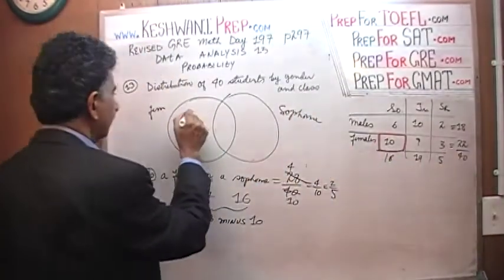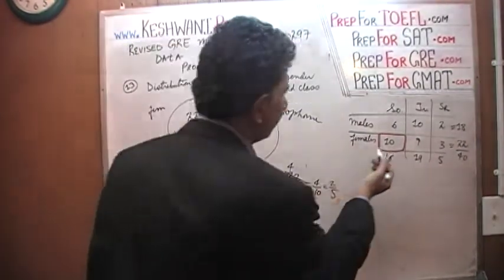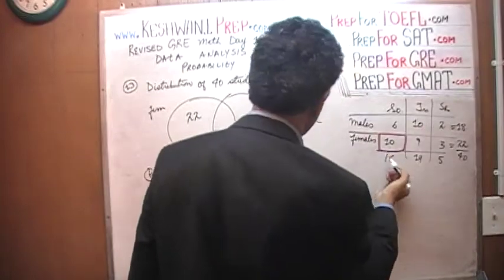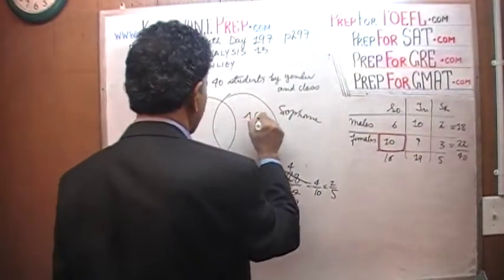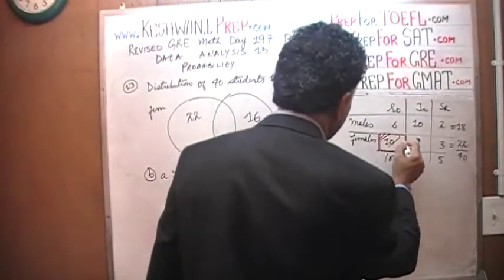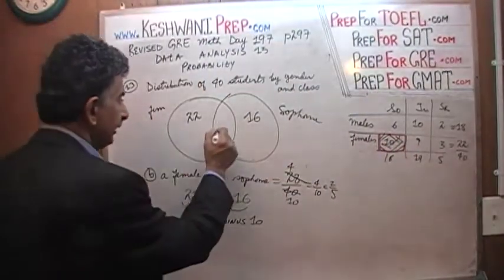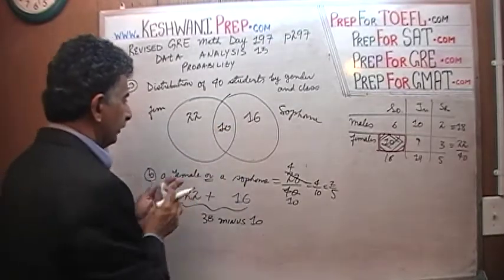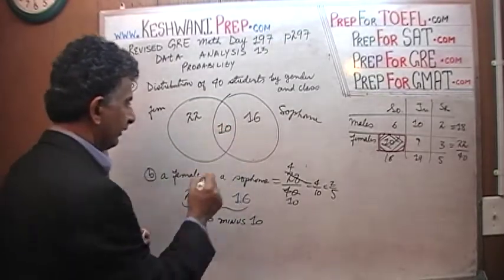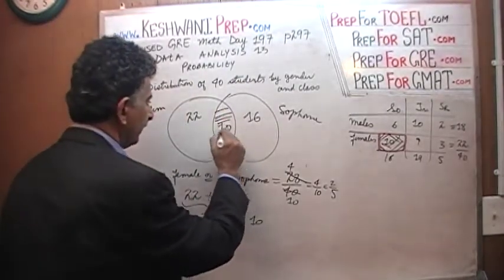There are 22 females. How many sophomores are there? There are 16 sophomores. And then we realize that the common cell is this one. This one is the common cell that appears in both cases, which is 10. So we put the 10 in the middle. We put 10 in the middle, which represents 10 females who are also sophomores. The common area, which is 10.